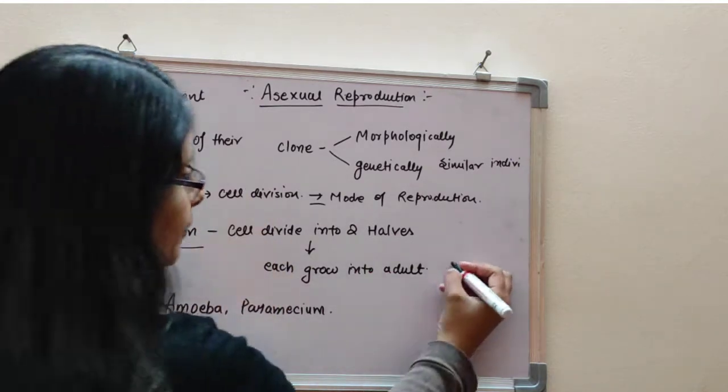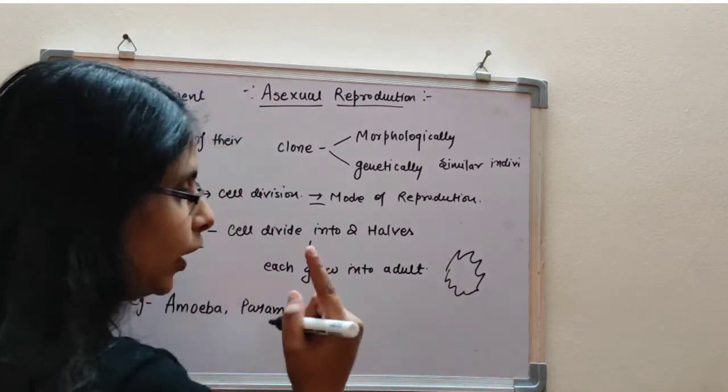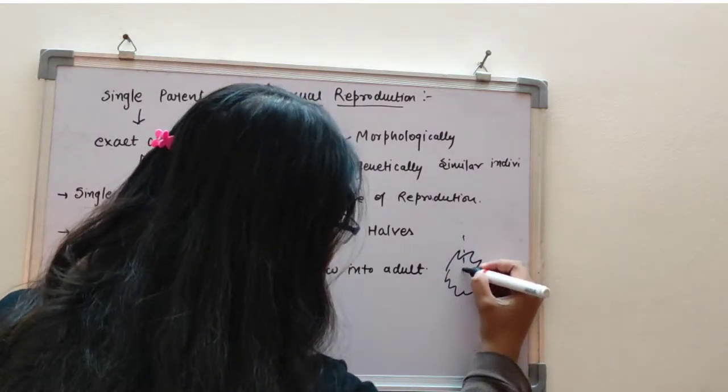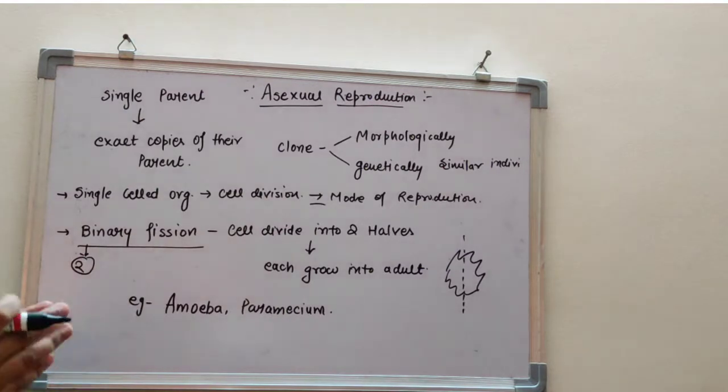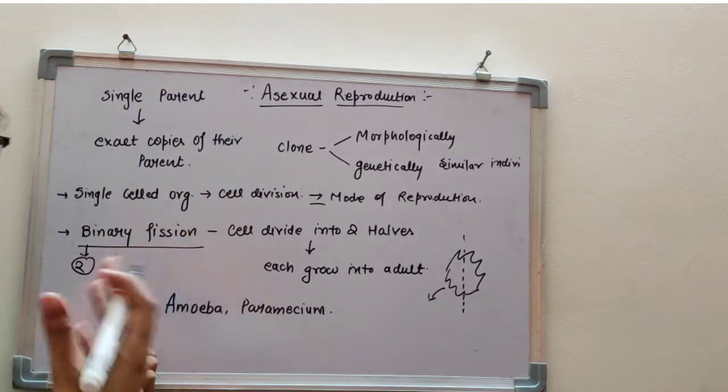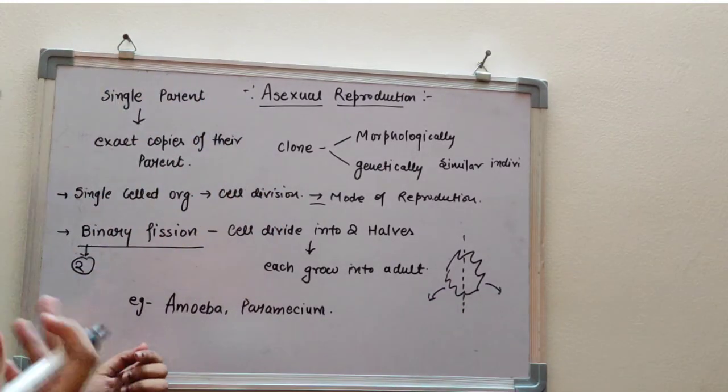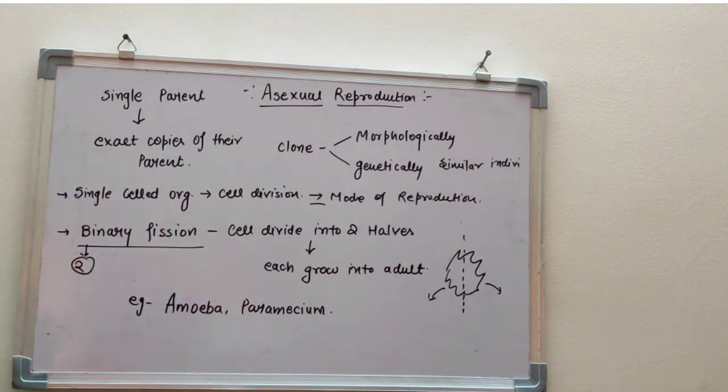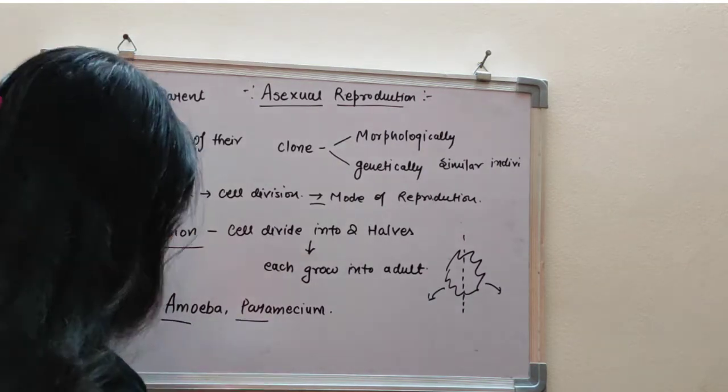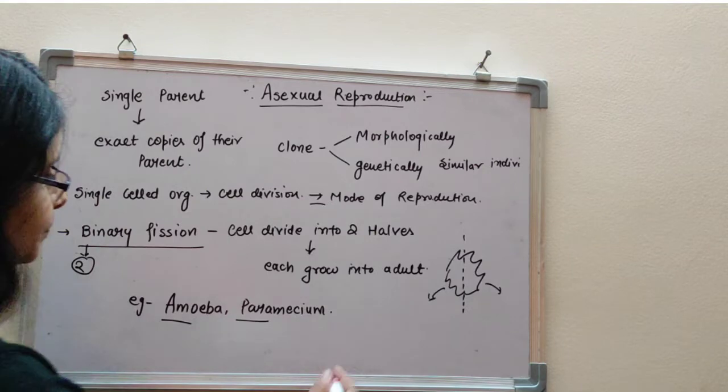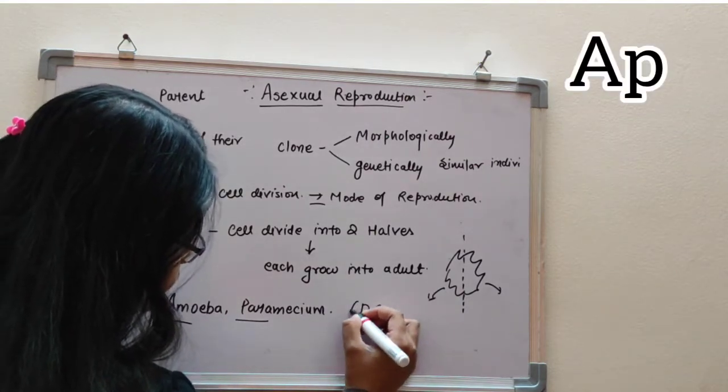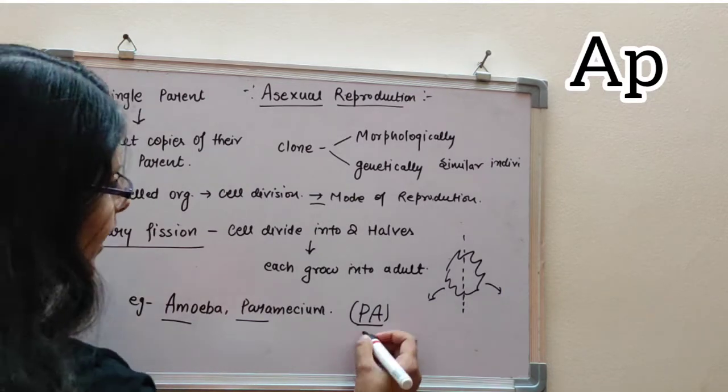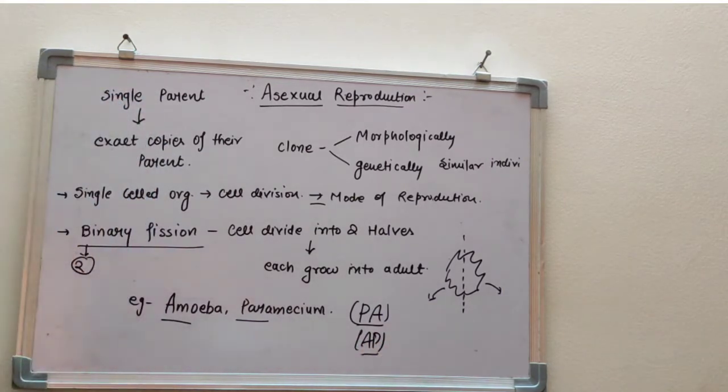For example, amoeba is made, and this amoeba divides into two parts. We have divided into two halves. Examples include amoeba and paramecium. Binary fission - amoeba and paramecium.